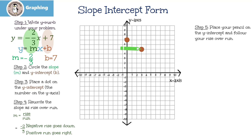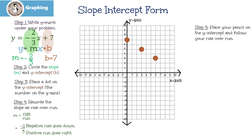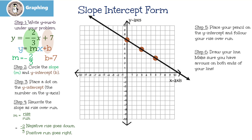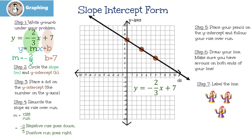Let's try it again: I'm putting my pencil here, going down 2 because it's a negative 2, and then running 3: 1, 2, 3. There's my dot — it's just crazy easy! Our next step is to draw the line. Notice that I have arrows on both ends, just like I said before — it goes to infinity. Our last step, step 7, is to label the line. And that's it!